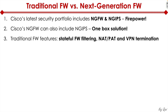Finally, traditional firewalls provide VPN termination. A firewall can also be a VPN concentrator, meaning users can terminate VPN sessions into the firewall to connect to corporate resources, or two branch locations can have a VPN tunnel between them so that traffic over the internet is completely encrypted and secure. These are the features that the traditional, legacy firewalls provided.